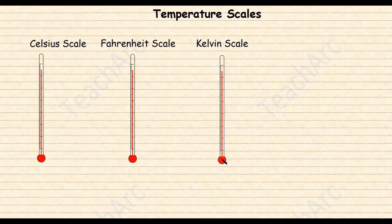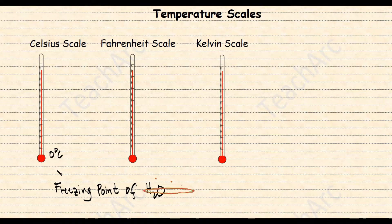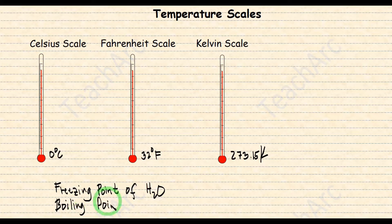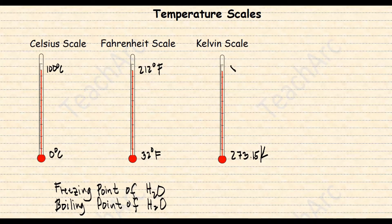For example, the freezing point of water in the Celsius scale is zero but it's 32 in the Fahrenheit scale and 273.15 in the Kelvin scale. The boiling point of water is 100 degrees in the Celsius scale, 212 in the Fahrenheit scale, and 373.15 in the Kelvin scale.